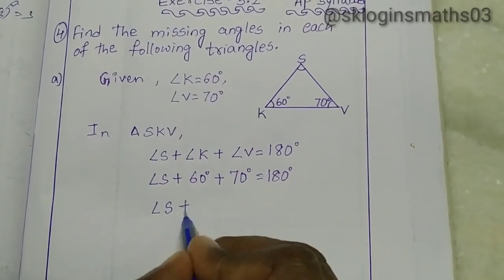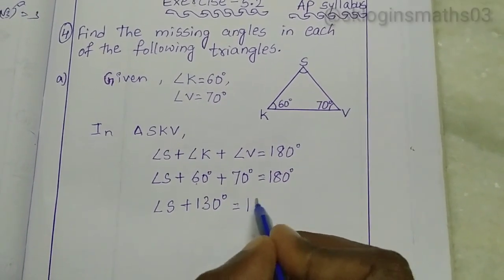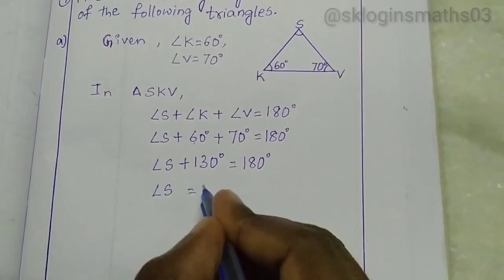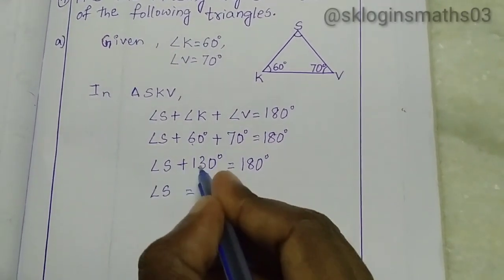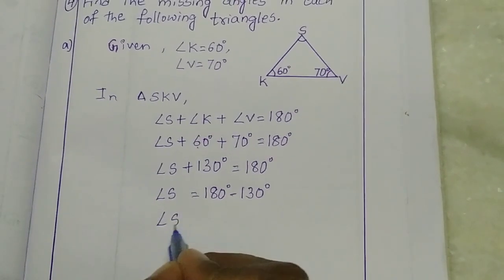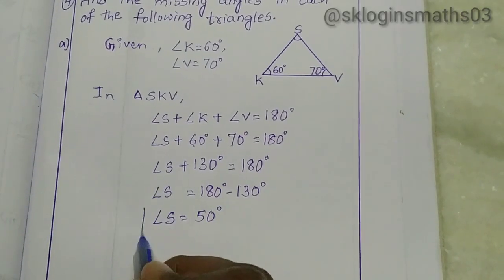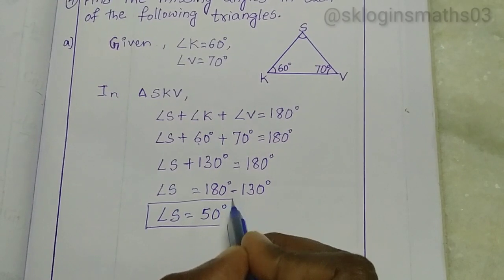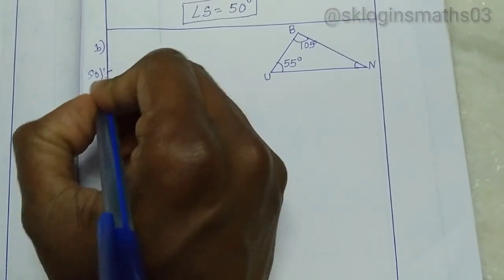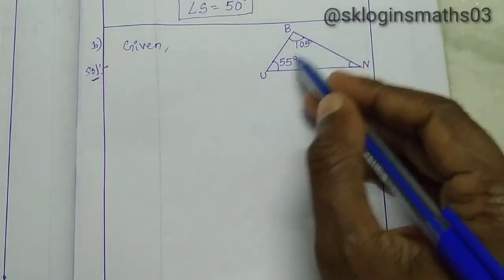Angle S plus 60 plus 70 gives 130 degrees. So angle S plus 130 is equal to 180 degrees. Transferring 130 to the right side: angle S is equal to 180 minus 130, which gives angle S equal to 50 degrees.